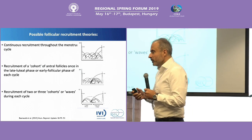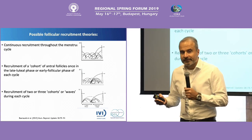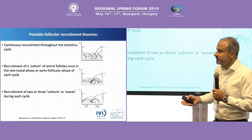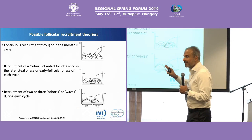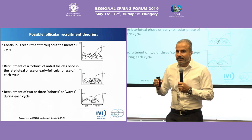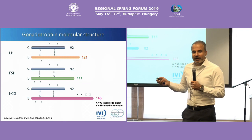What we usually do is start stimulating patients on day two or three of the cycle in an antagonist cycle. But what we should know is that we can start stimulating women at any given time. The follicular recruitment — there are different theories — but basically you can have a cohort or two or three cohorts through the menstrual cycle, and you can start stimulating women at any given time.